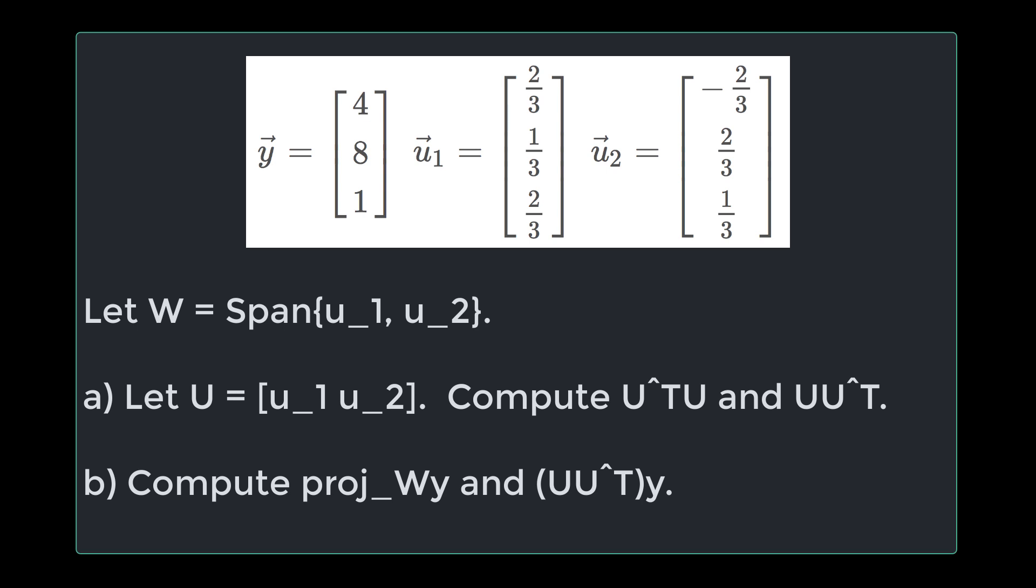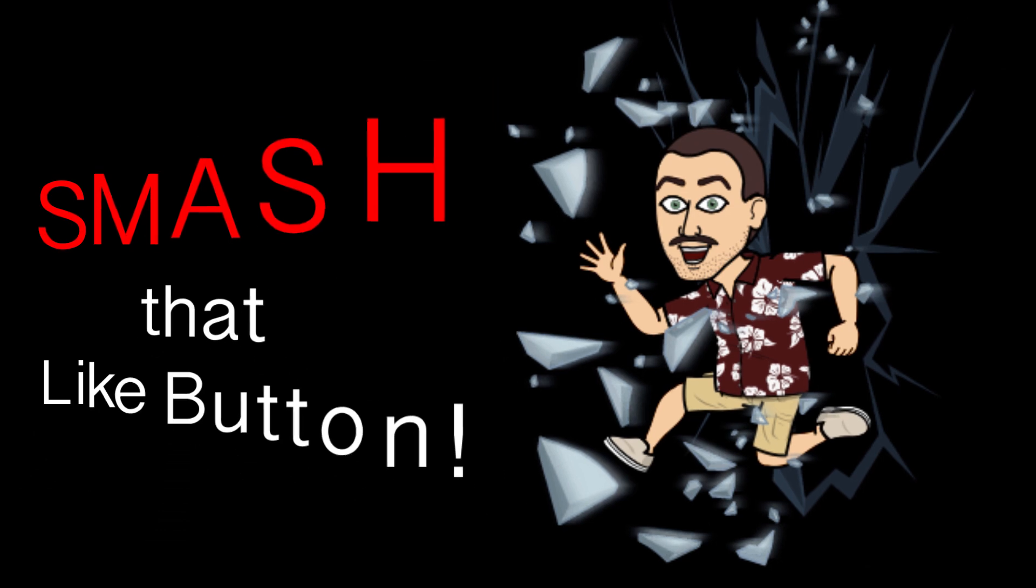First, let U be the matrix that has u1 and u2 as columns. Compute U^T U and UU^T. Then, compute the projection onto W of y, and the product UU^T times y. Smash that like button, and let's get started.